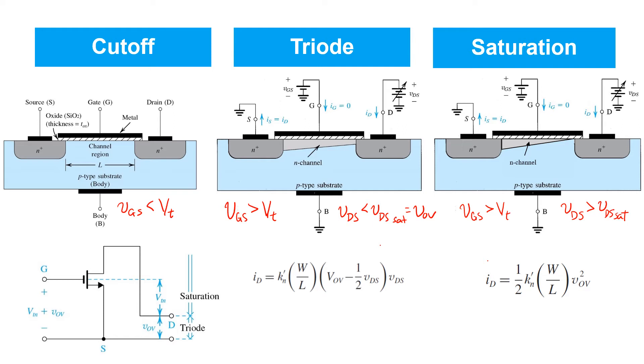In cutoff, no current flows. In triode, the drain current is predicted by this expression here. It depends on both the overdrive voltage and VDS. And in saturation, the drain current becomes a weak function of VDS. And we see this classic so-called square law, because the drain current is proportional to the square of the overdrive voltage.